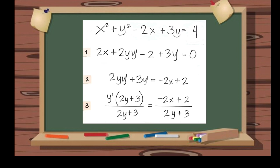Third step is we need to isolate y prime. So, let's factor y prime. The result is y prime, quantity of 2y plus 3, equals negative 2x plus 2.